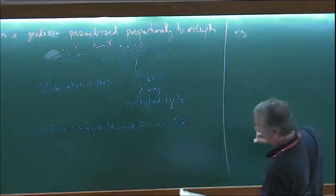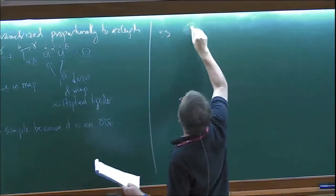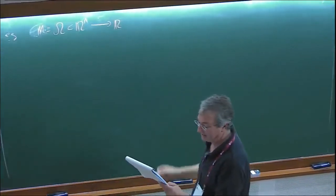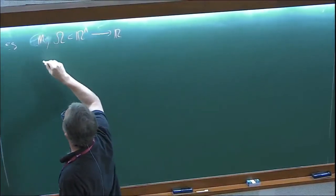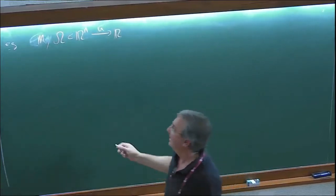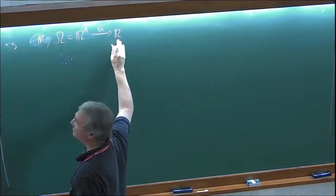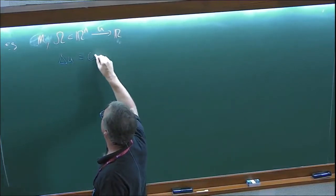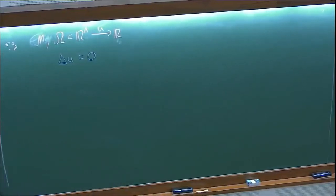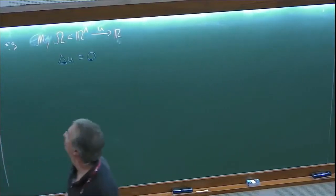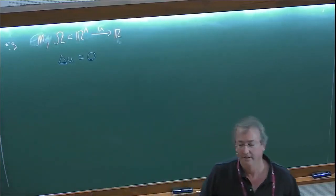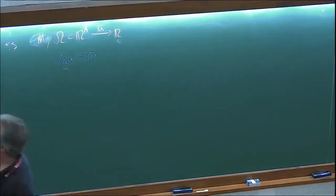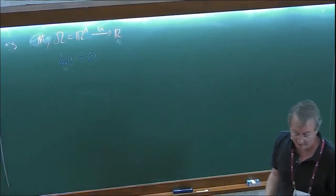Next example: simplify the target. Let M be some domain in ℝⁿ and map to ℝ. In that case, we have a function, and the harmonic map equation is just Laplace's equation: Δu = 0. This funny operator simplifies to just a second-order derivative on the function and nothing else. It's a linear second-order equation.